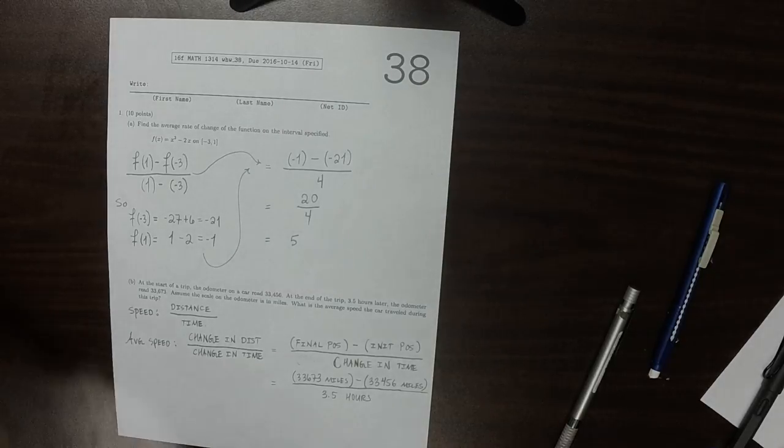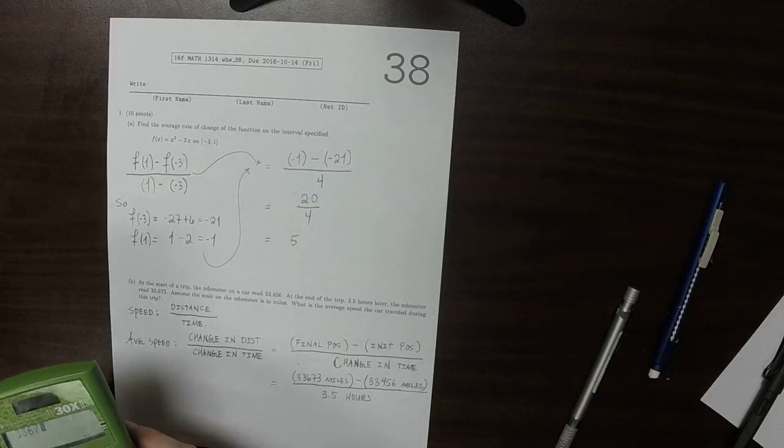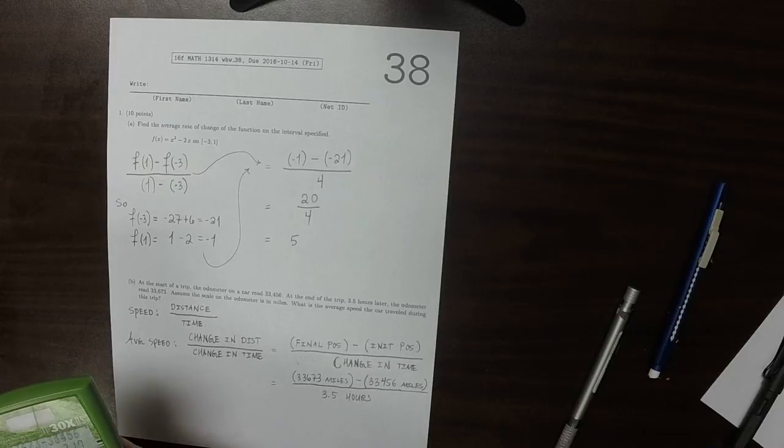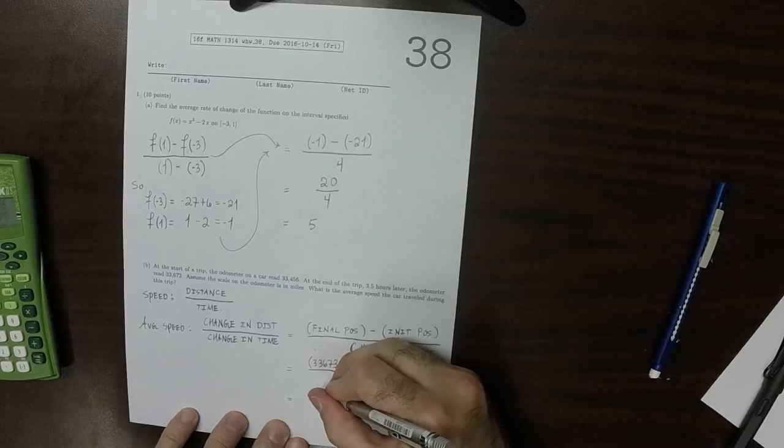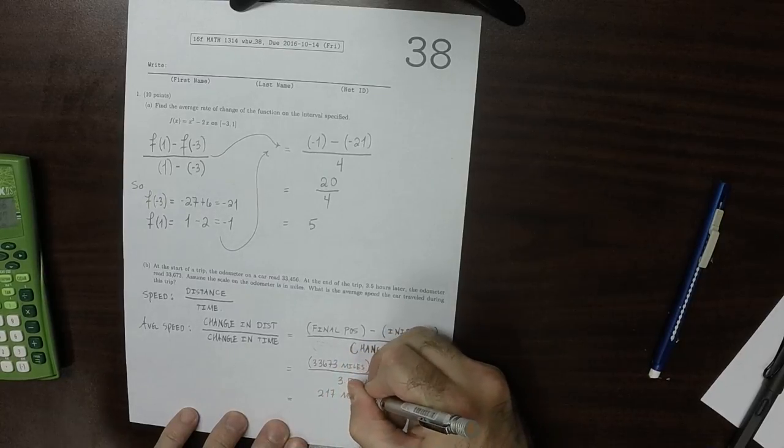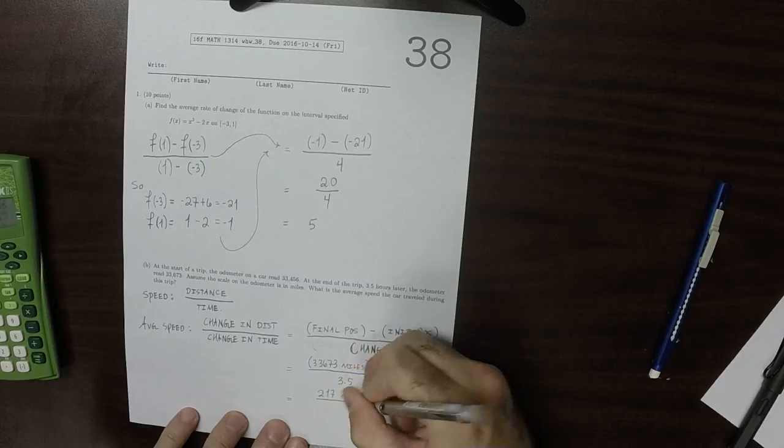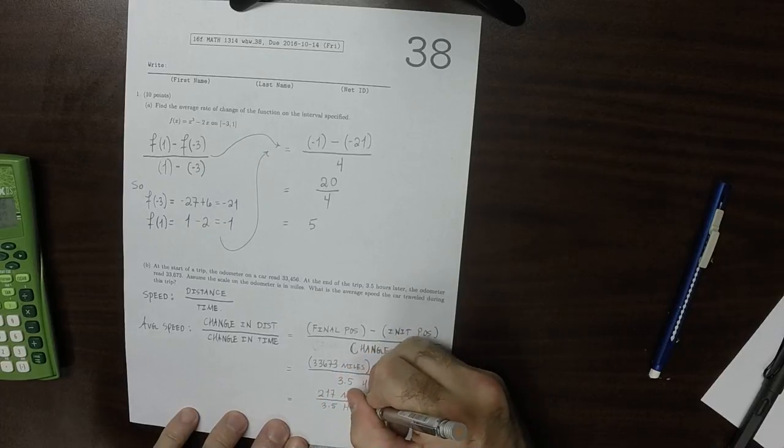And so, 33673 minus 33456 is 217. So that would be 217 miles in 3.5 hours.